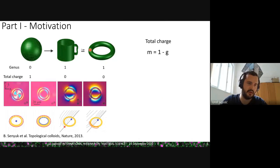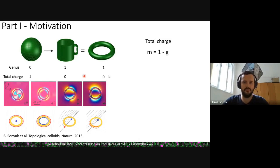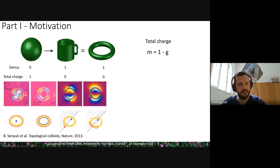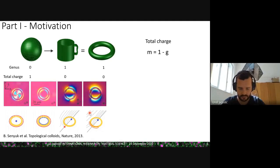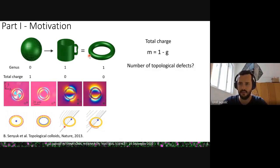So as I said, you have different genuses of shapes. For genus zero, you have a total charge of one. For shapes with genus one — one hole — we predict zero total charge. This was work done in Boulder, Colorado by collaborators, who showed that if you put toroidal particles inside liquid crystal, you get two defects: one at the outer edge, one in the middle — or one at the outer and one at the inner edge. In different orientations you can have different combinations, but the topological charge always stays the same. You can add or subtract defects, but the total number is always connected to the shape of the particle.